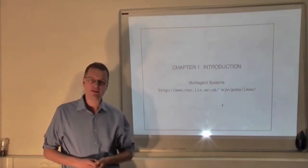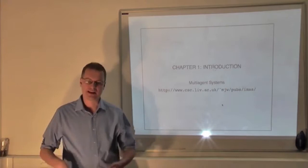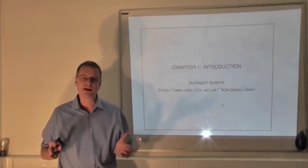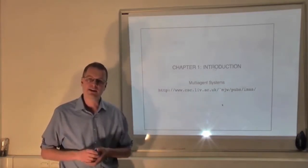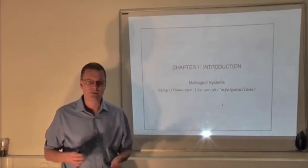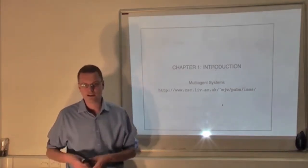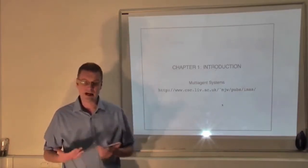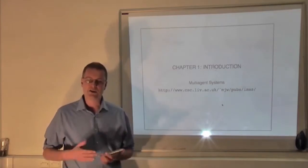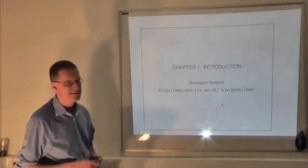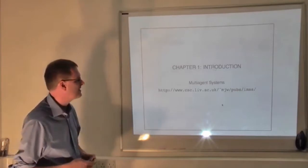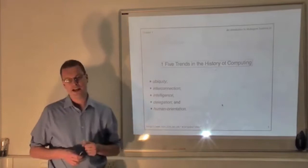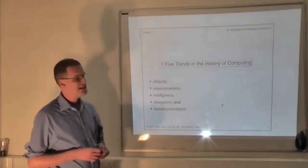I want to say a few words about where the multi-agent systems paradigm comes from — how we've ended up studying these things that we call multi-agent systems. Students often assume, naively, that new scientific developments, things like programming languages and programming paradigms, emerge spontaneously — that somebody wakes up one morning with a good idea and that's how things happen. But of course that's not how they happen. They emerge from ideas and trends that are prevalent at the time. Multi-agent systems are no exception. What I'm going to argue is that multi-agent systems arise from five trends throughout the history of computing: ubiquity, interconnection, intelligence, delegation, and human orientation.